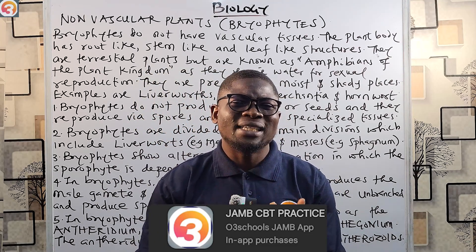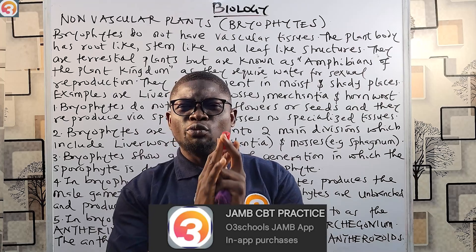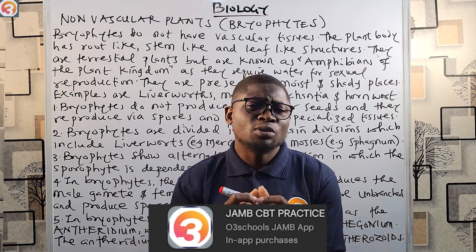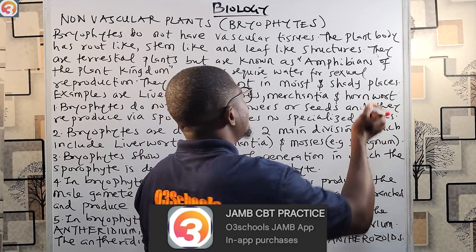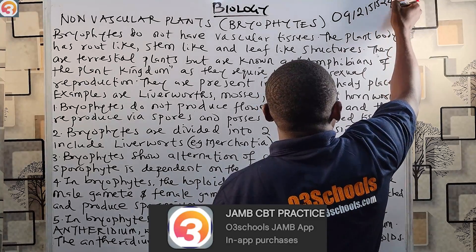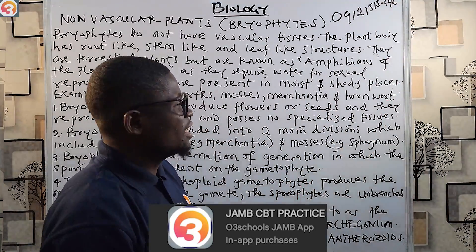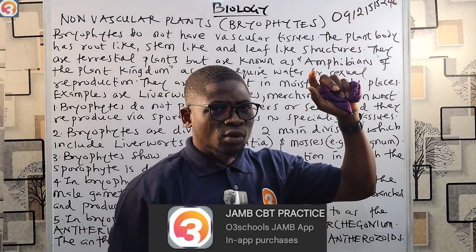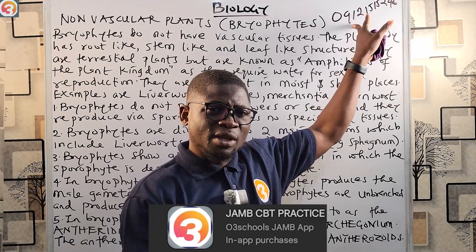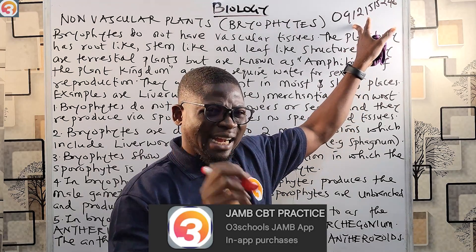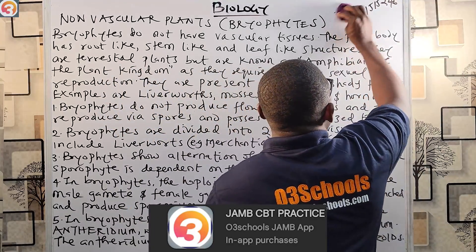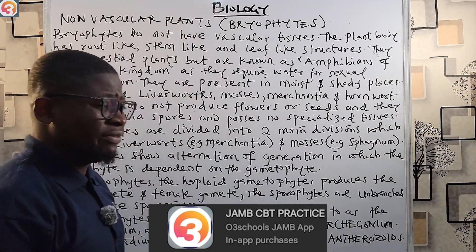Paying online with your ATM card will automatically unlock the app for you to start practicing immediately. But if you are transferring to the O3 Schools app account, you need to send the receipt of your payment to this number — 09121515240 — on WhatsApp. Once you send the receipt on WhatsApp, they will immediately attend to you and manually activate your app. Enough about the app — it is a very good requirement for your exam.